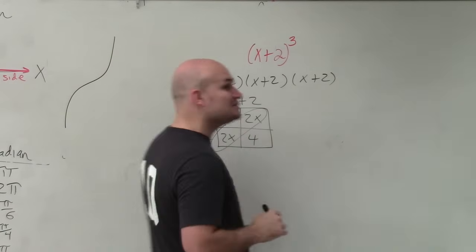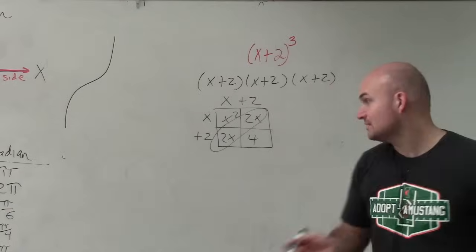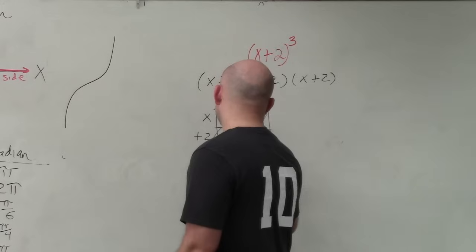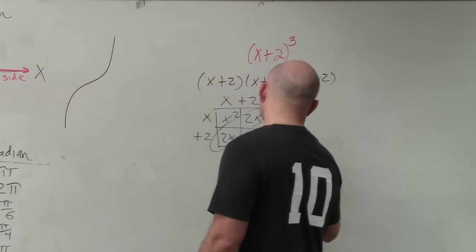The 2x are like terms so we can combine them. So therefore, the product of x plus 2 times x plus 2 is x squared plus 4x plus 4.